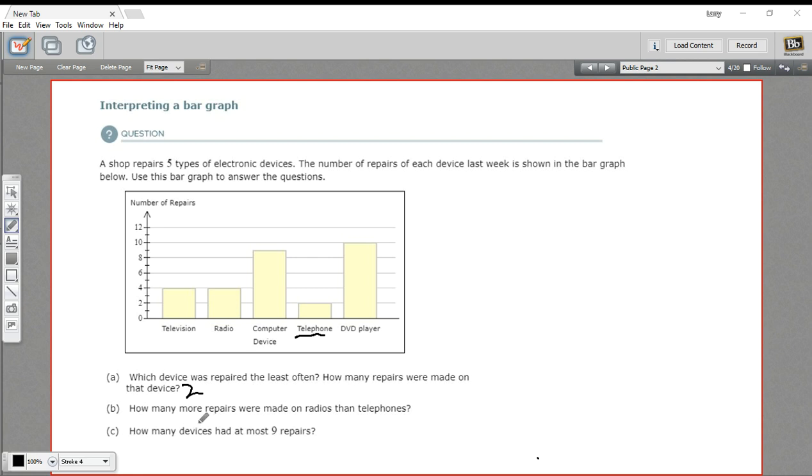All right, let's try B. How many more repairs were made on radios than on telephones? So we have to compare radios and telephones. We know telephones had two repairs. I'll just put a two in there. Radios looks like it goes up to four. So radios had two more repairs. Four minus two is two. So how many more repairs on radios than telephones? That'll be two.